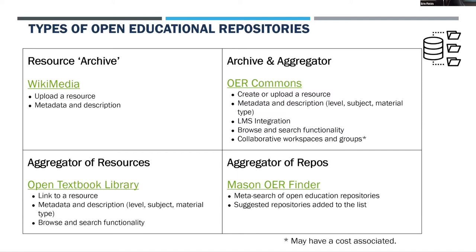Archive-aggregators are repositories that both host resources and gather metadata from other places, providing both options. These are usually third-party platforms run by businesses or non-profits, often with a paid component. For example, OER Commons allows you to create an OER within their system, or just add metadata and descriptive information about an object that exists in a different system. It can also integrate content into learning management systems. Additional cost comes when you want collaborative workspaces or additional metrics.